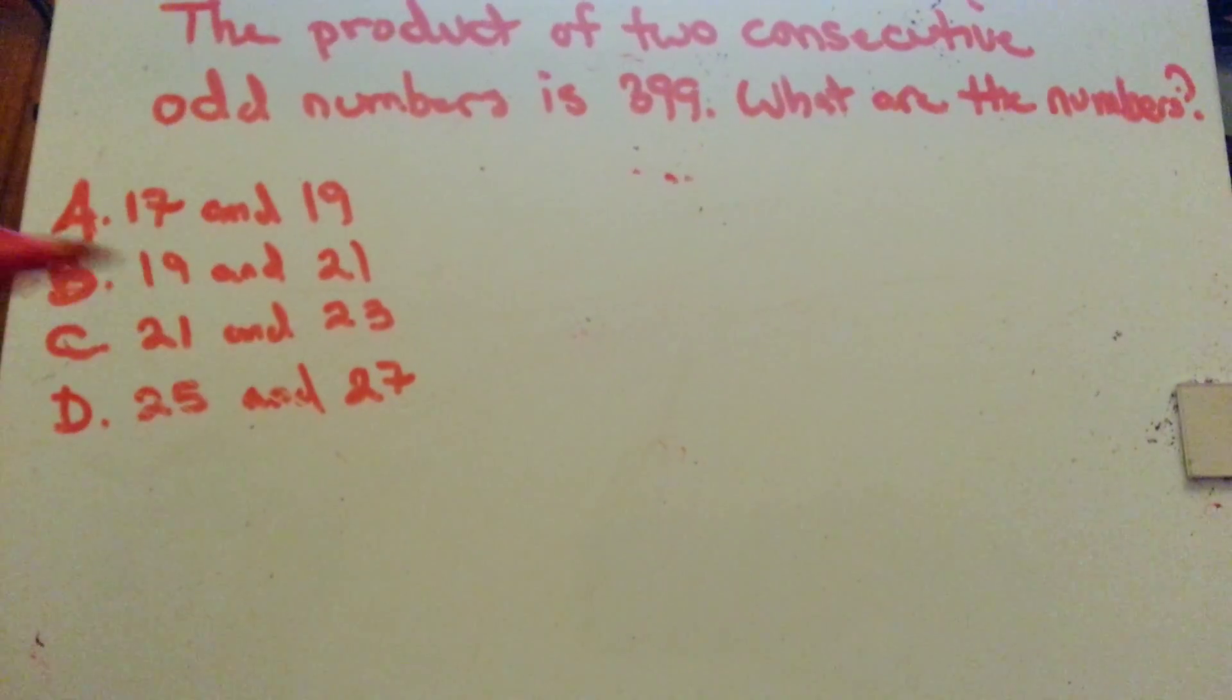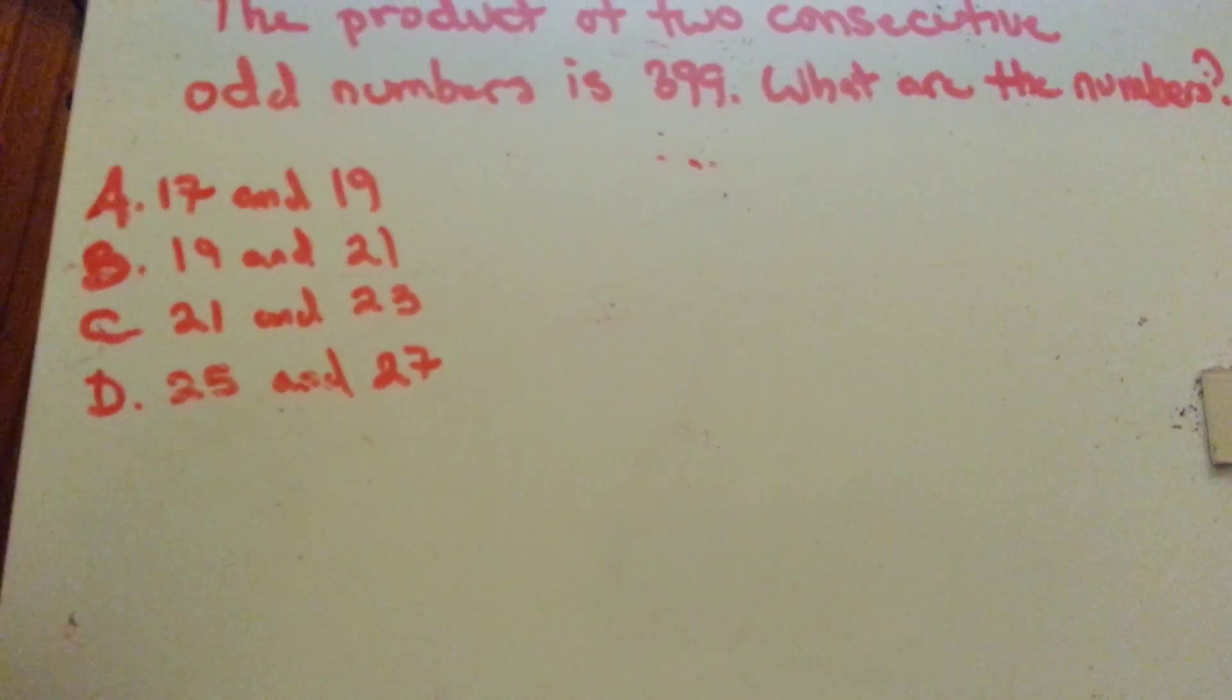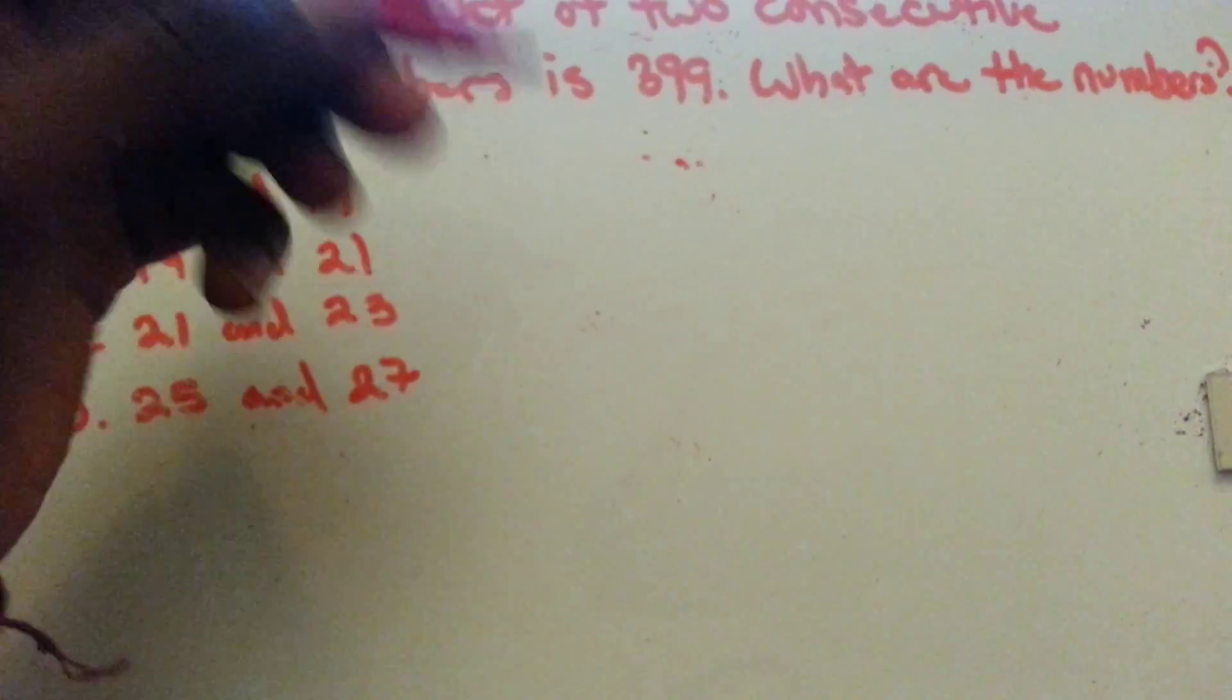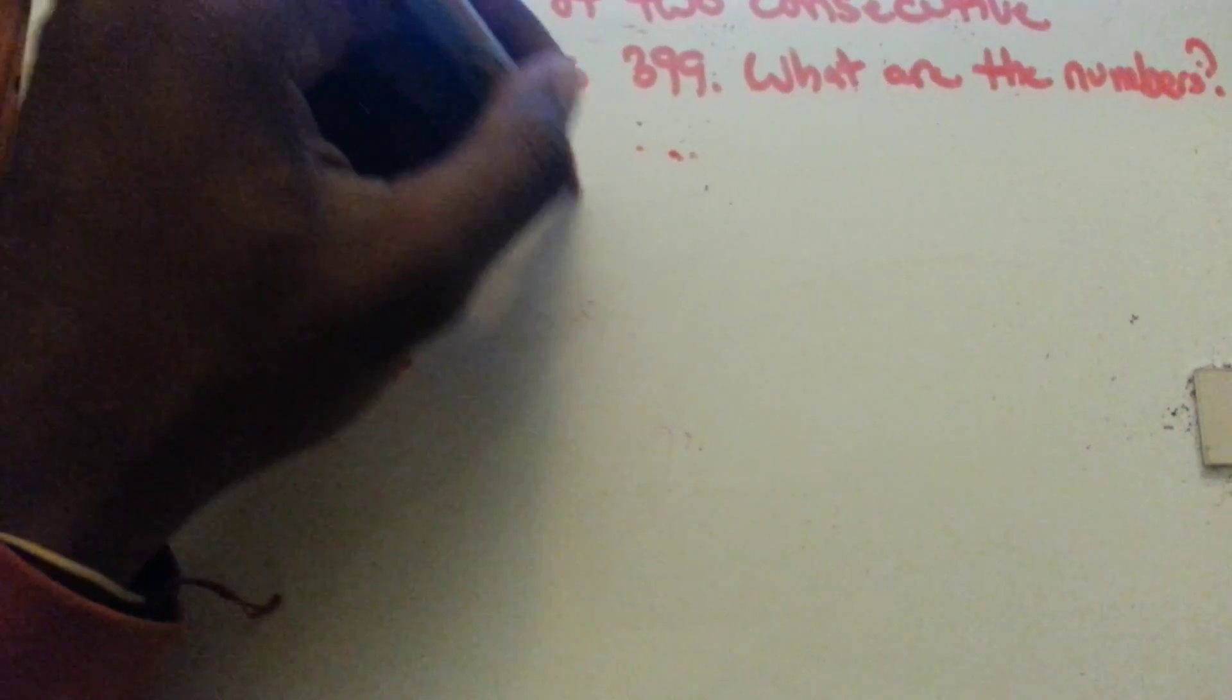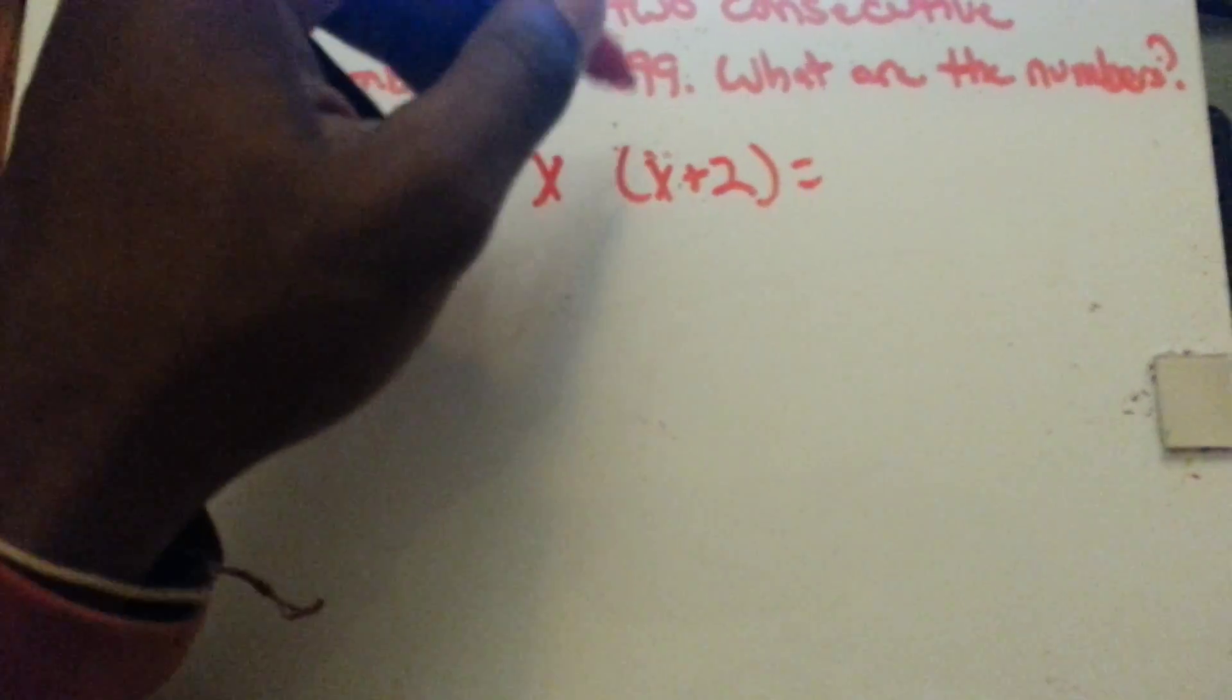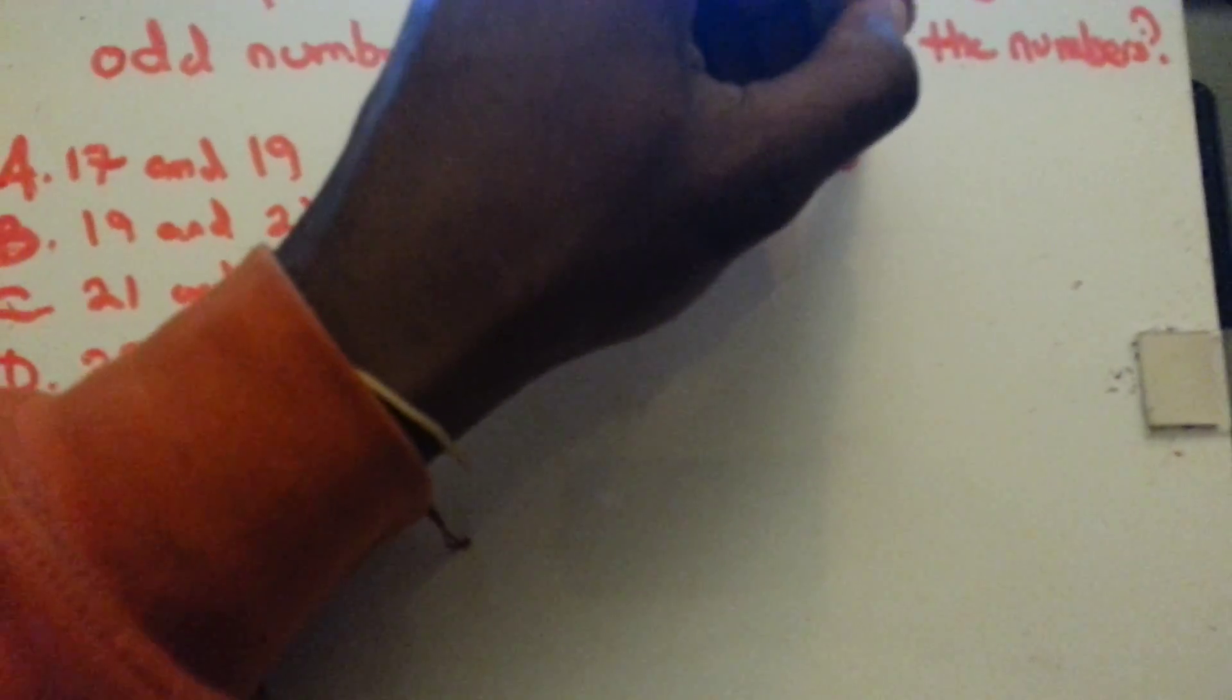Now with this problem, what you could do is set up a whole quadratic equation and figure it out by factoring. You set one number as x and the other number as x plus 2, and you know that those two equal 399.